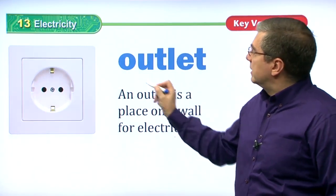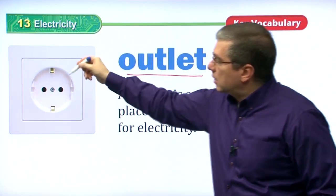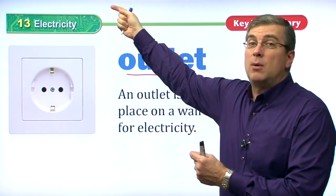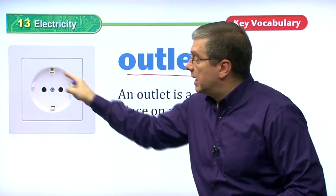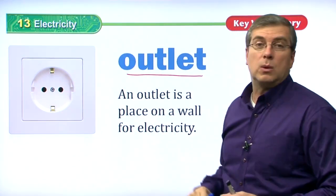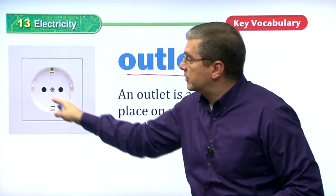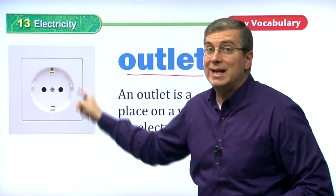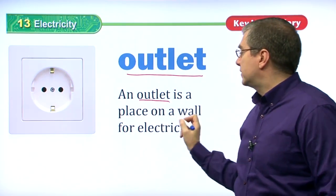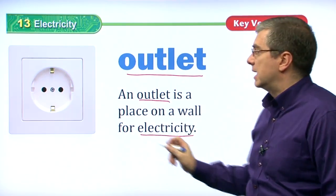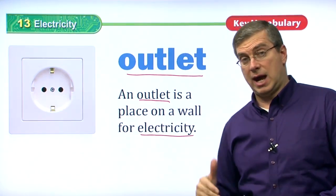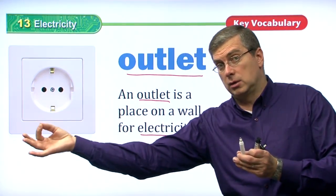An outlet is the place where the wire comes to. Wire carries electricity from the power plant to your house — there's a wire behind the wall that goes to the power plant. The wire comes to a stop and ends right here in the outlet. An outlet is a place on a wall for electricity, and this is how electricity comes from the power plant to your house, along a wire.